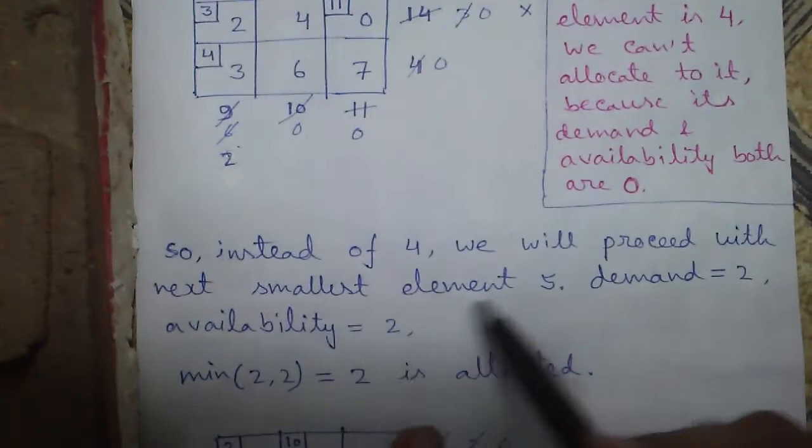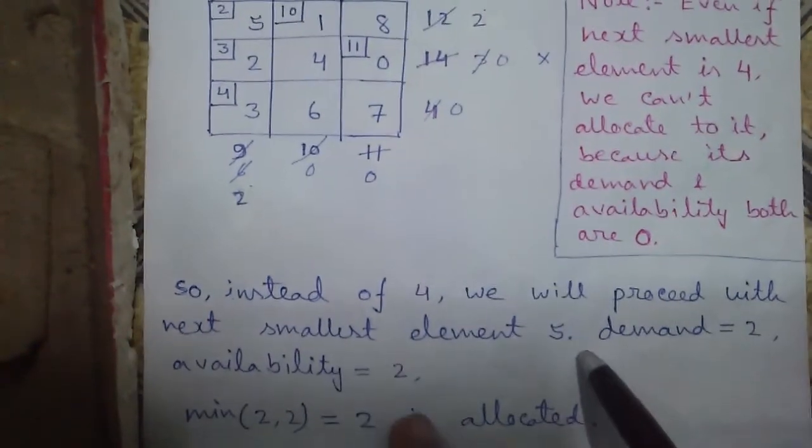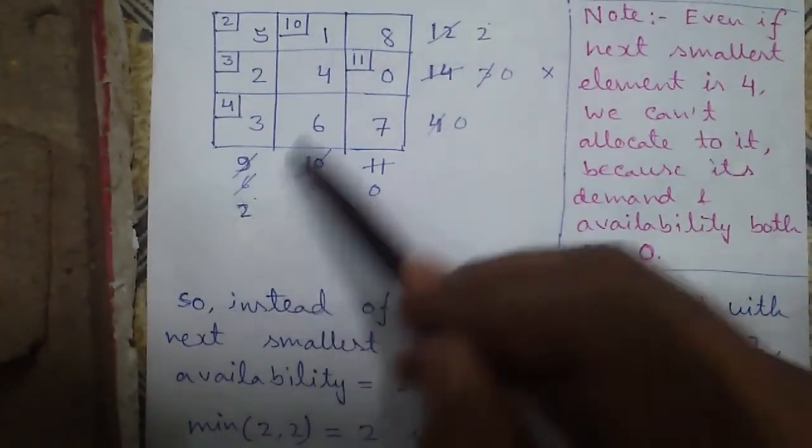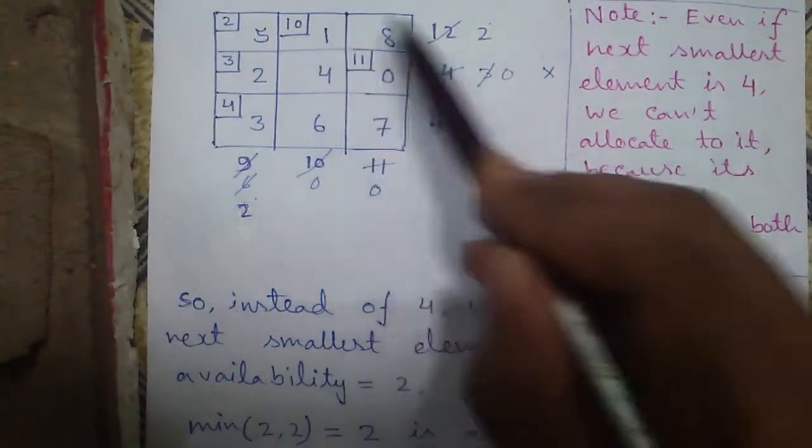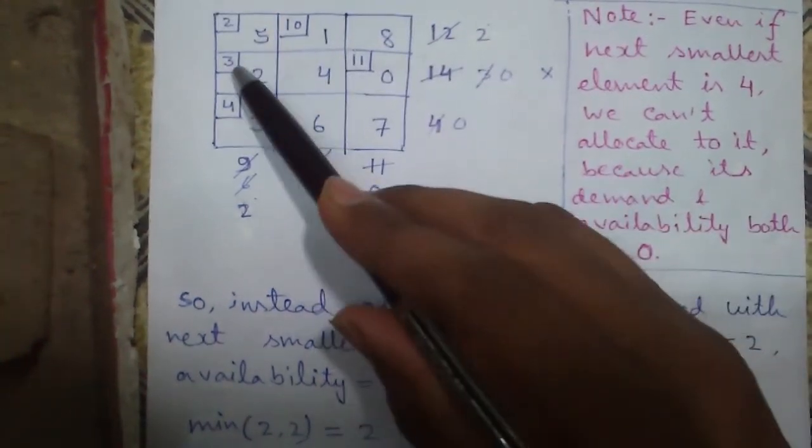Instead of 4 we will proceed with next smallest element that is 5, and against 5 demand is 2 units and supply is also 12 minus 10, which is 2 units. So we can allocate just 2.